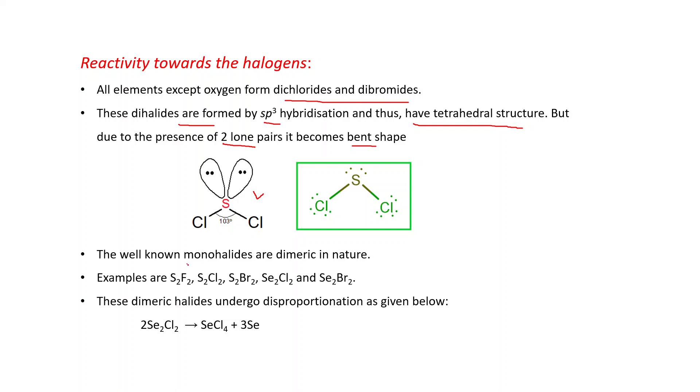The well-known monohalides are dimeric in nature. For example, S2F2, S2Cl2, S2Br2, Se2Cl2, and Se2Br2. These dimeric halides undergo disproportionation. I think you are familiar with this term, that is same substance undergoes oxidation as well as reduction. For example, 2Se2Cl2 will form SeCl4 and Se. That's for today. Thanks.